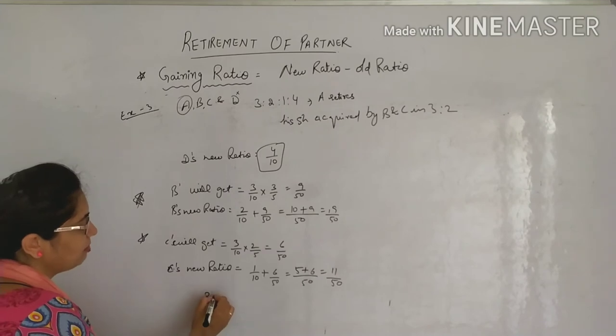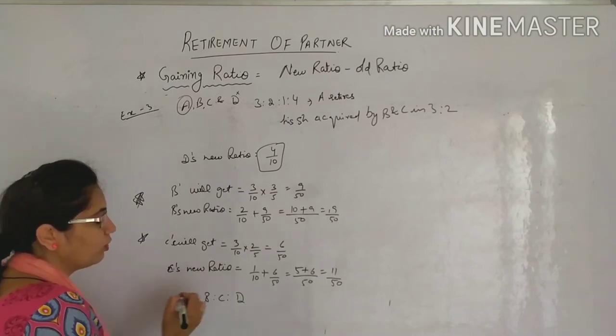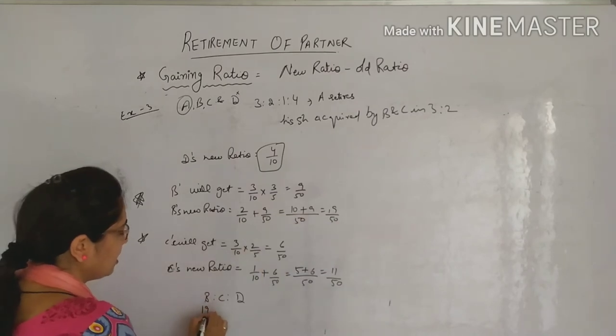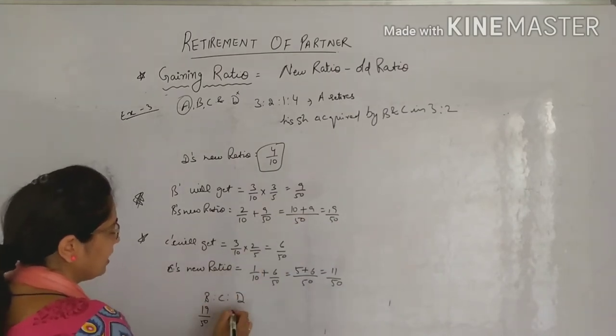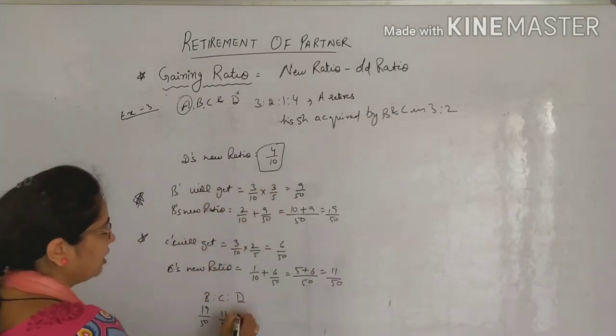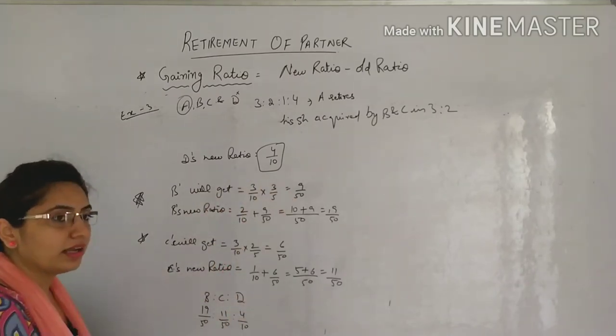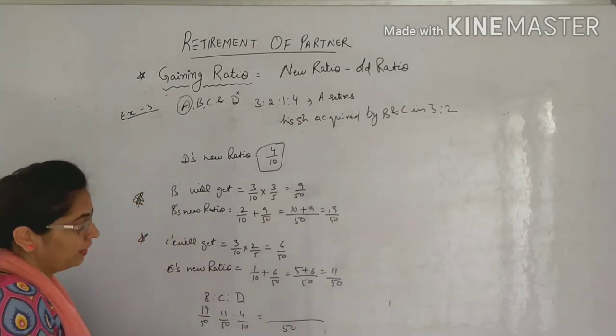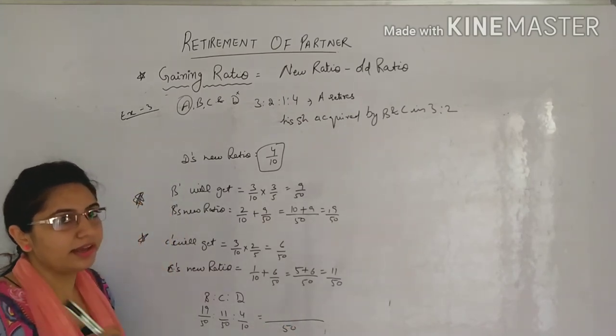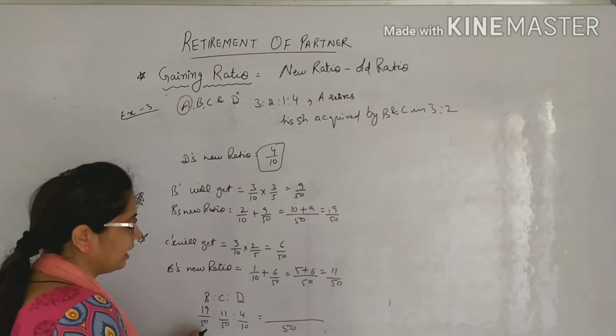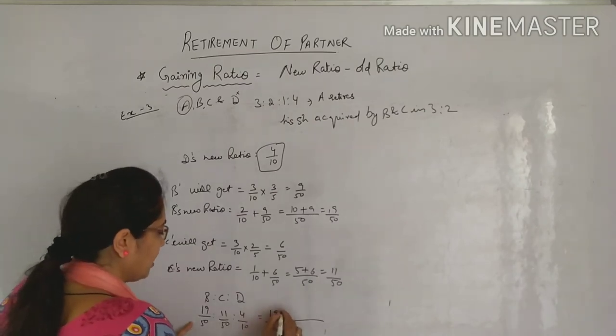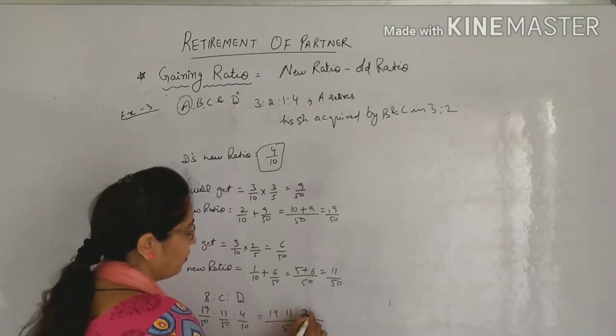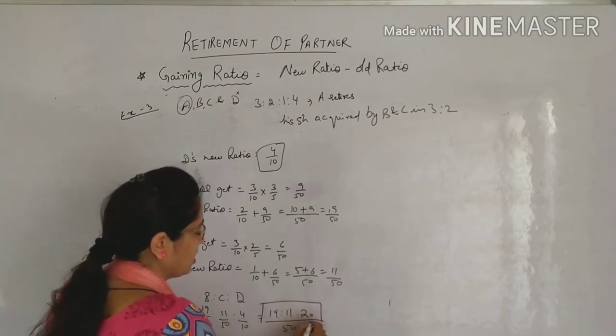So now we have Mr. B is to C is to D. Three people remain, and their new ratios have also come. They have 19 by 50, C has 11 by 50, and Mr. D is continuing with 4 by 10. Going forward what will you do? LCM. Why take LCM? Because these three are not the same. So to make the ratio, we need to make them same. So it becomes 19 is to 11 is to 10. 5 fives are 50, and 5, 4 fives are 20. So this will be your new ratio. Clear?